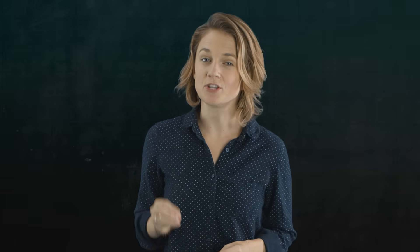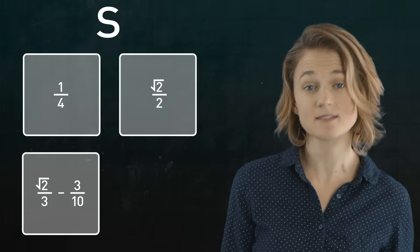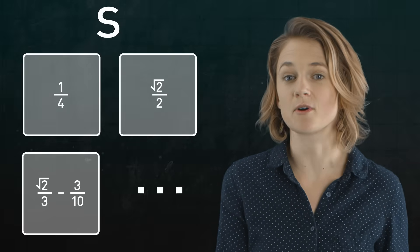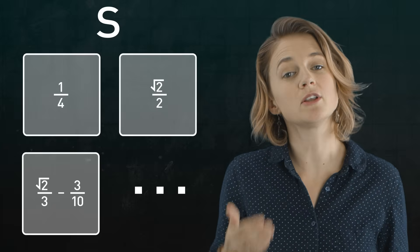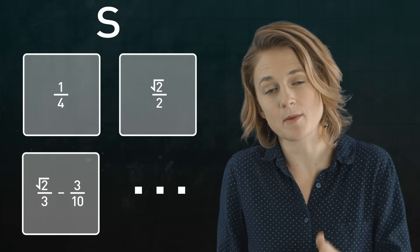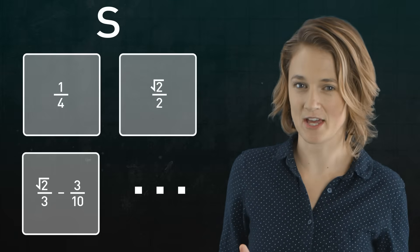Now, we'll form a new set S by selecting one representative from each bin. For example, S might contain 1 quarter from the first bin, square root of 2 over 2 from the second bin, and square root of 2 over 3 minus 3 tenths from the third bin, and so on. We don't know exactly what the contents of S are, but we know that it contains exactly one representative from each bin. Here's the big punchline: this new set S has no size. It's non-measurable.